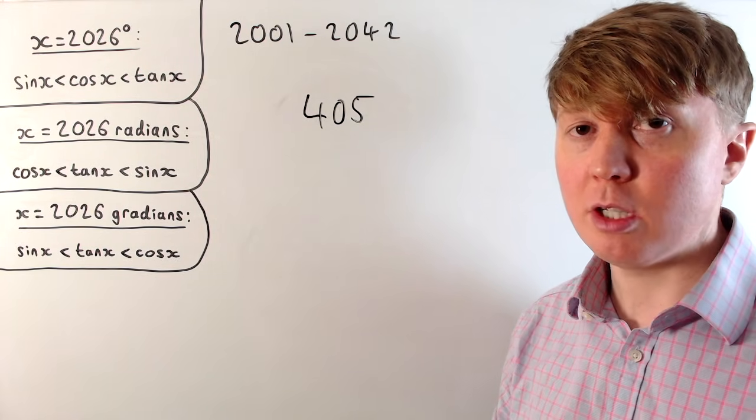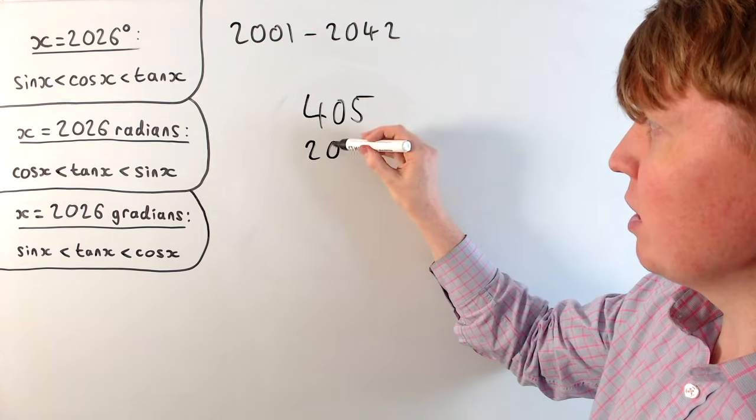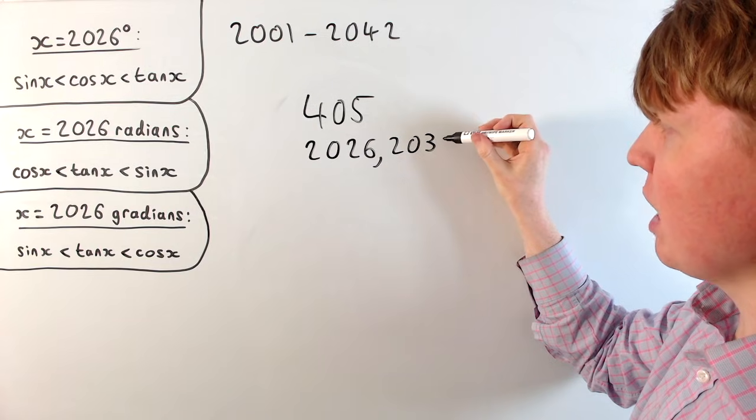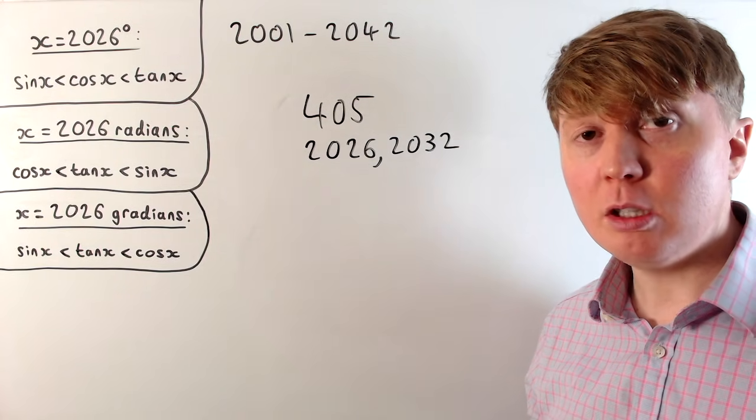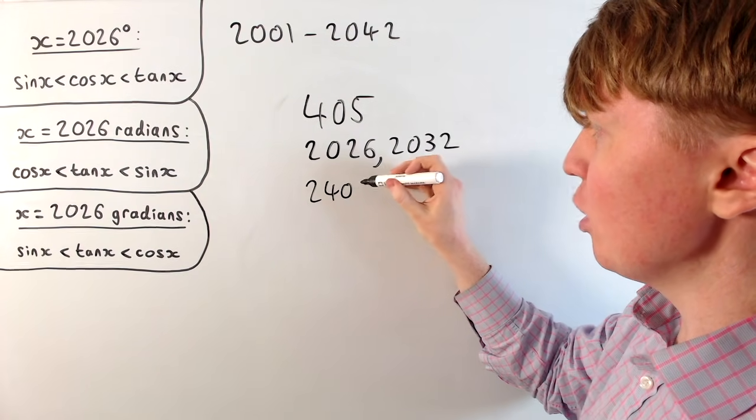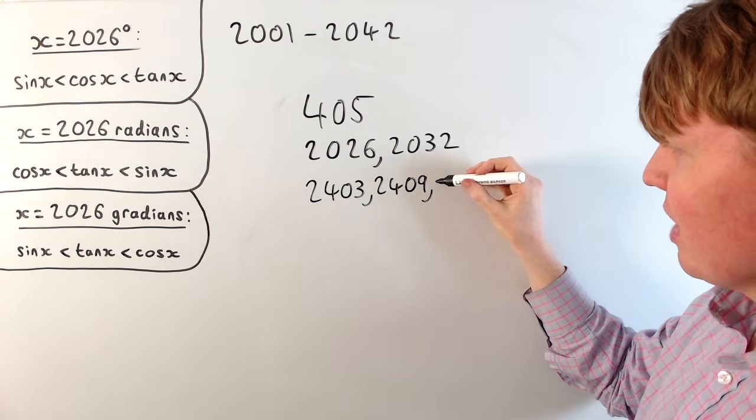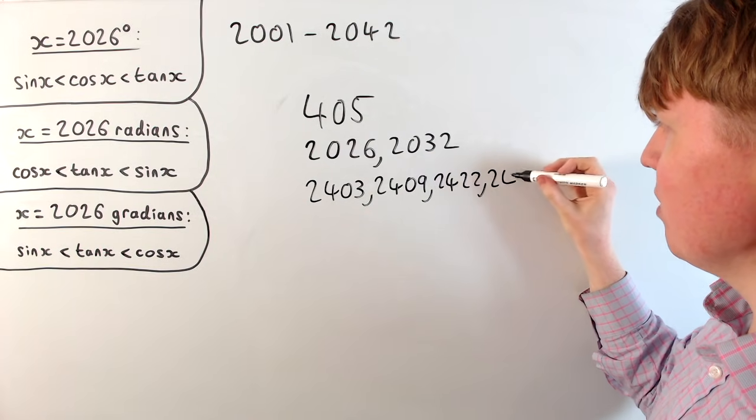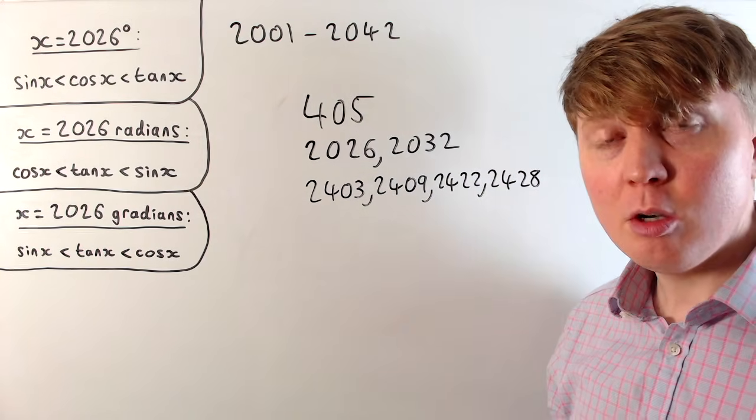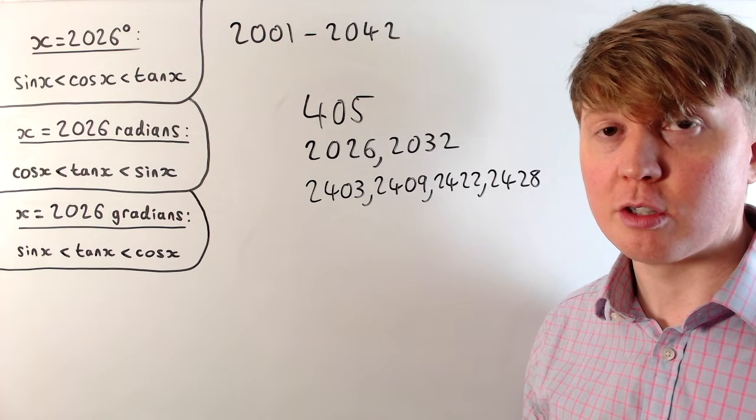I think this is particularly interesting now. We're starting to get towards something that's actually quite unique here, that this occurs in 2026, but then having only occurred once before since the year 1, we get it again in really short succession in 2032. And then if we look a little bit further to the future, we get some really interesting structure that this actually occurs again in 2403, then again in 2409, then in 2422, and finally in 2428.